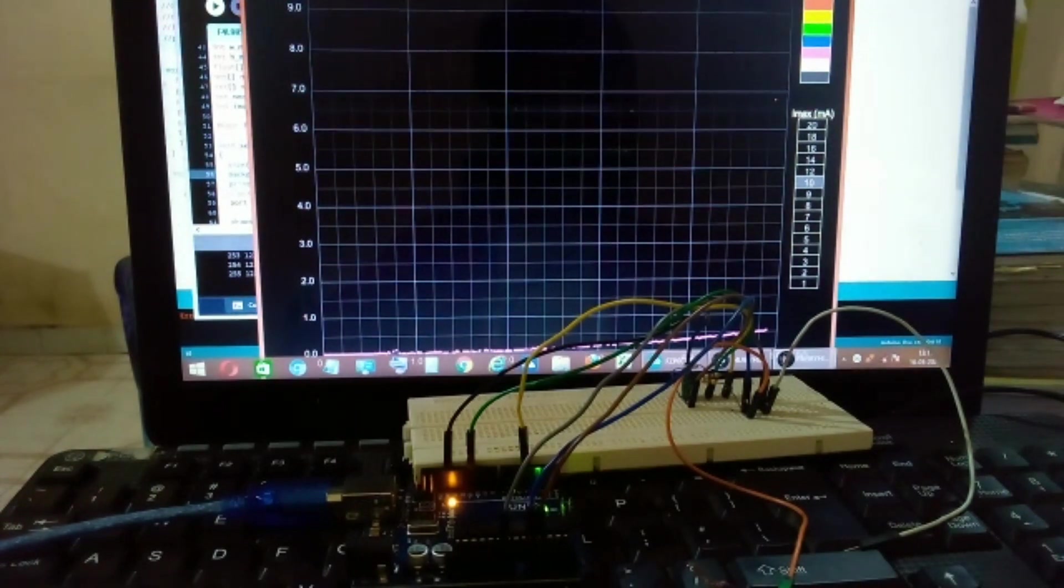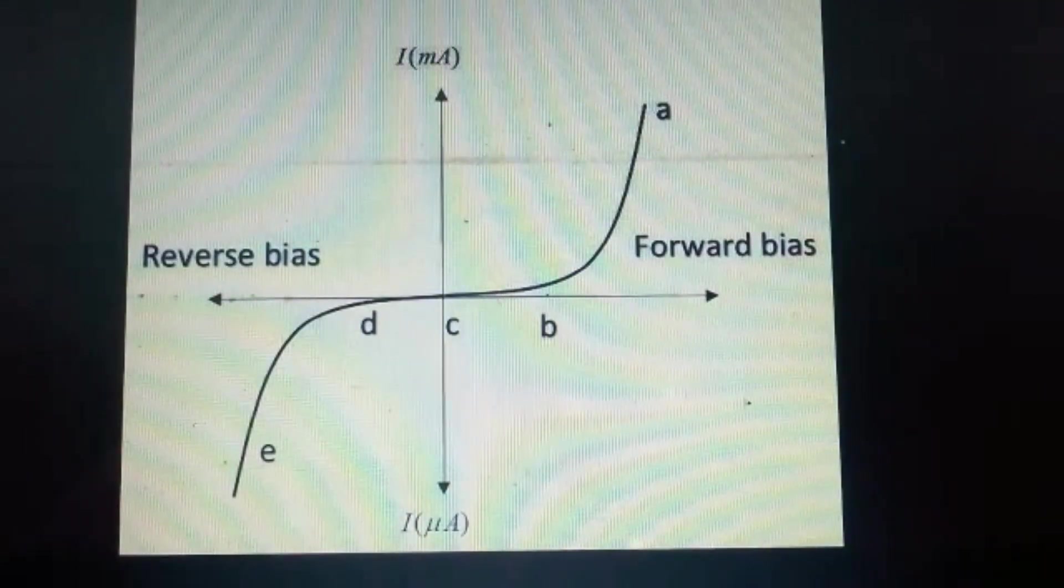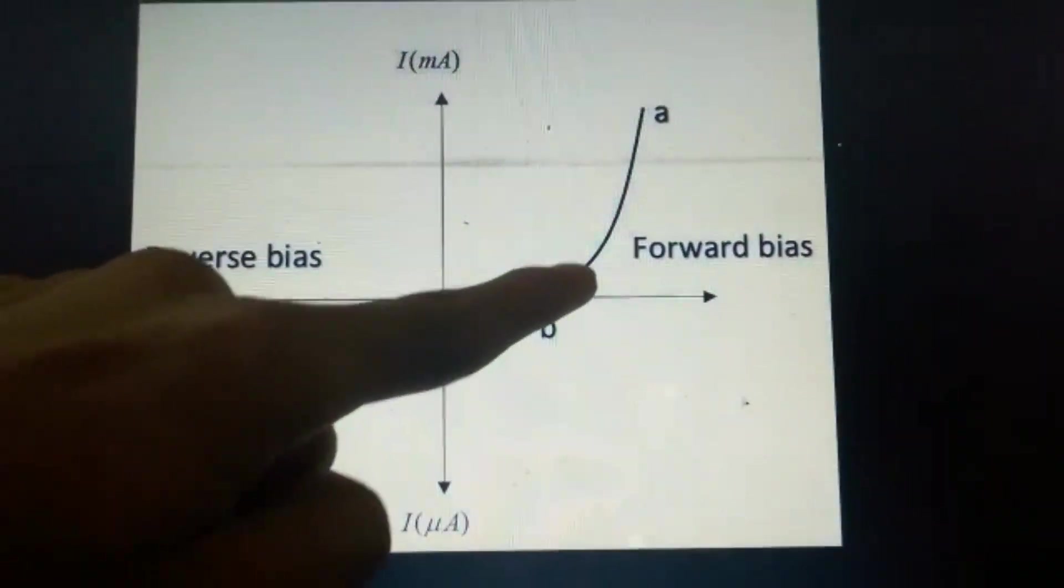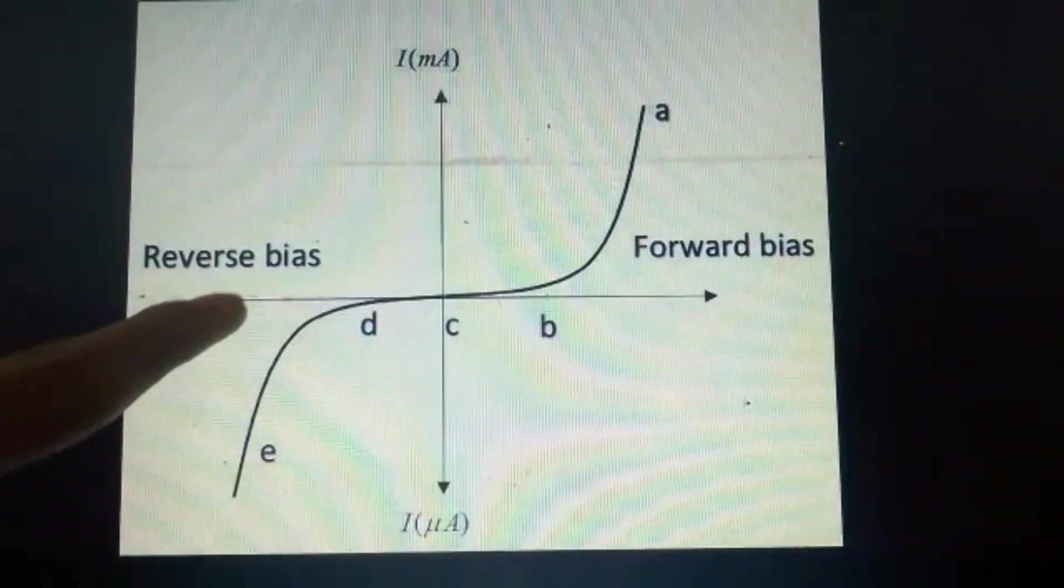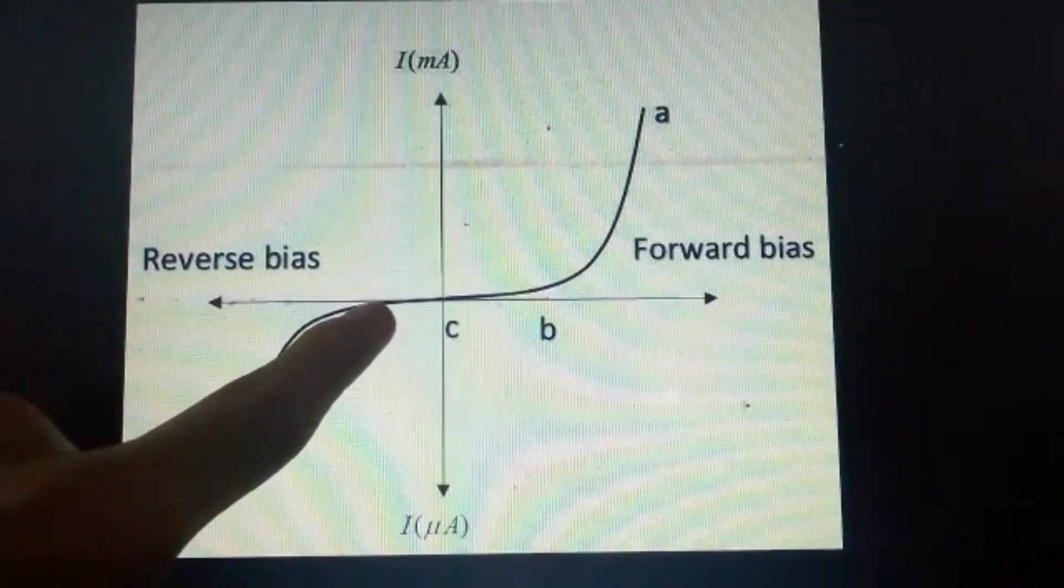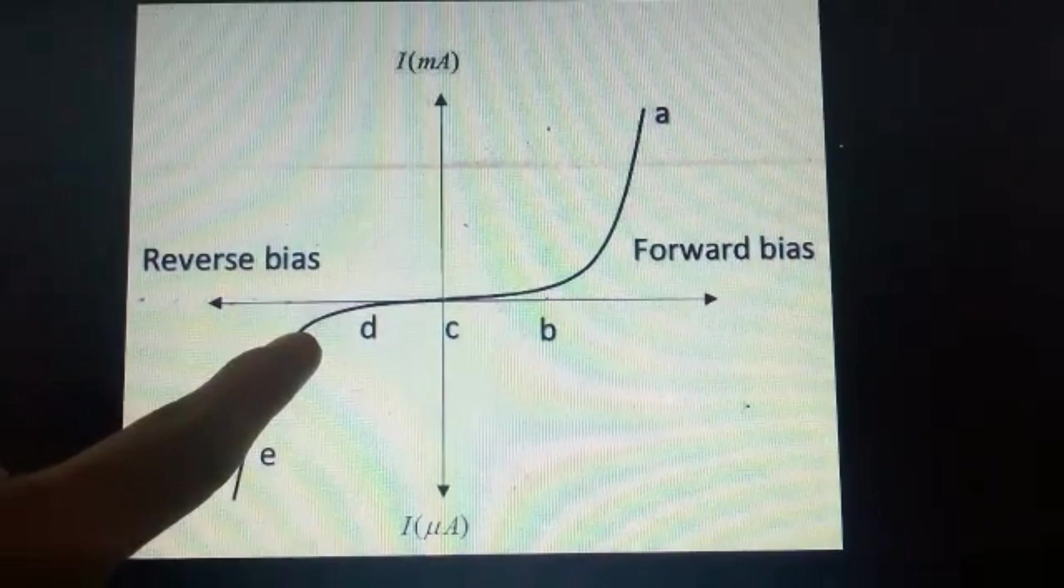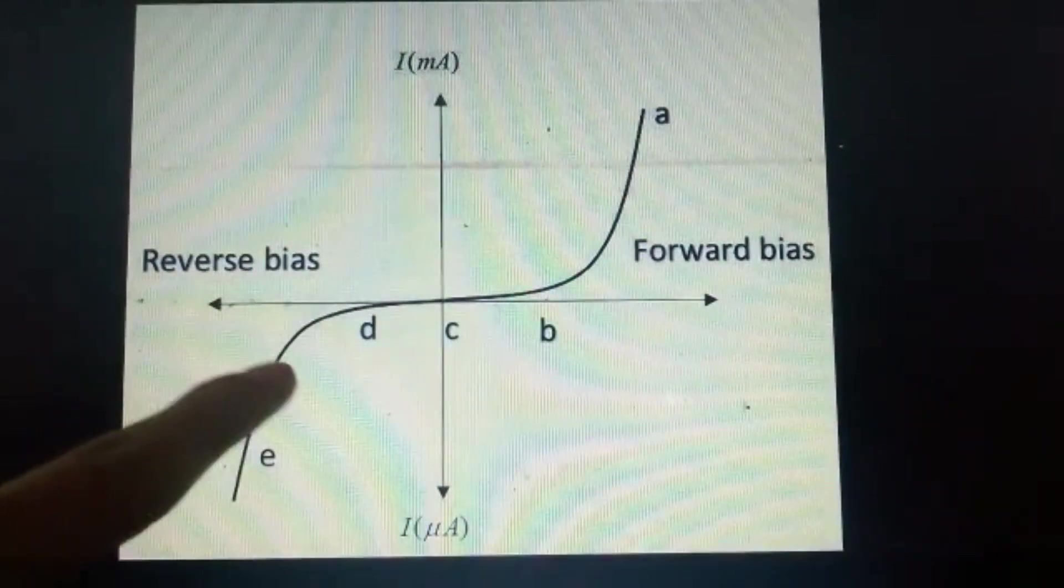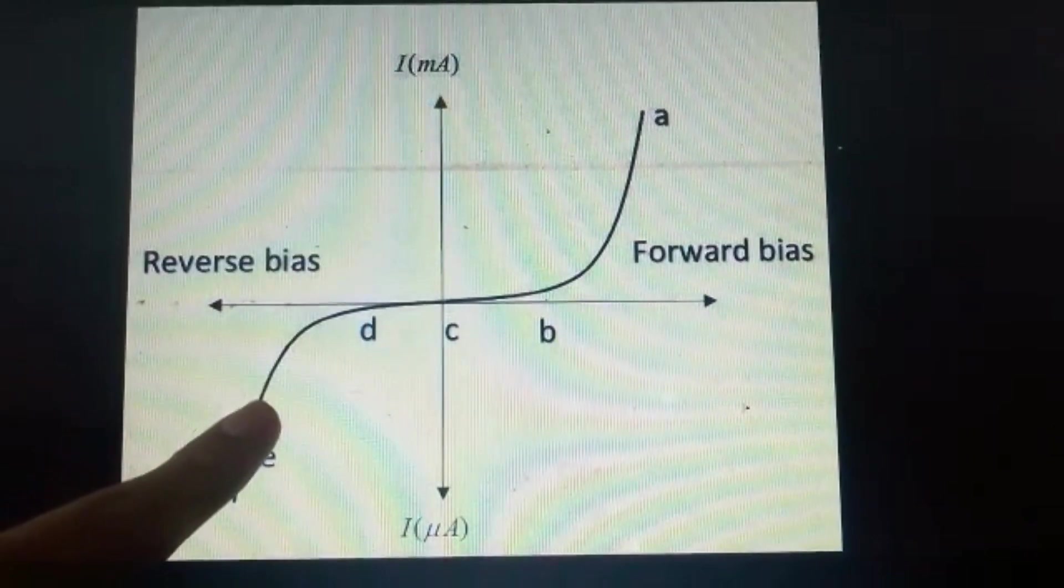Because of the limitation of the software, I cannot show you guys how the diode's reverse bias condition works. Let me demonstrate it with the help of an image. Here we have the IV characteristic curve of the diode. Here we have the forward bias condition and this is the reverse bias condition. And this region here is called the leakage current and this is also another knee point as we have one here. And this part over here is where the avalanche effect starts.